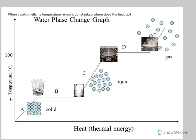When heat is given to a substance, its temperature rises. But when a solid melts, its temperature remains constant. So where does the heat go? To explain this, let us look at the temperature-heat graph drawn here.